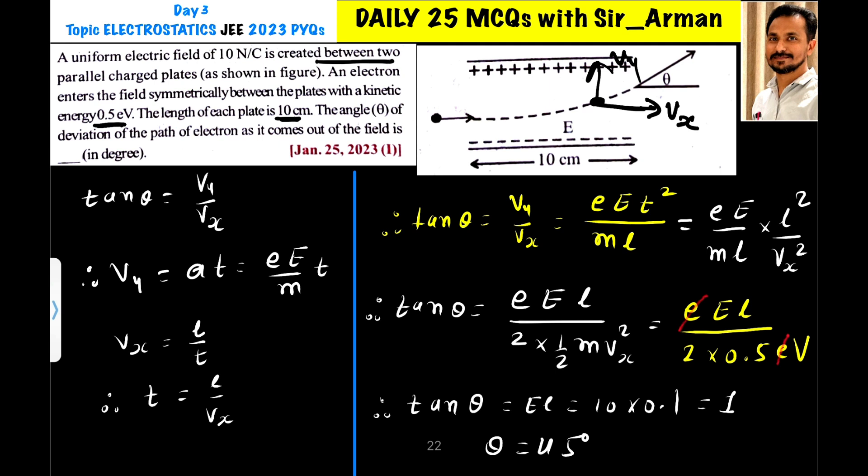Now for horizontal velocity vx, let us assume this charge covers distance l which is the length of the plate in time t. Then horizontal velocity vx equals, t equals l by t. We make t as a subject. So t equals l by vx. We use this term here.